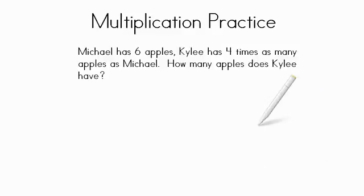To review, we have a word problem here. Michael has 6 apples and Kylie has 4 times as many apples as Michael. How many apples does Kylie have? Well, we know Michael has 6 and Kylie has 4 times. So our problem would be 4 times 6.